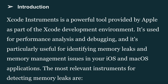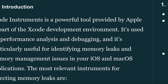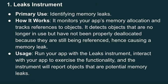The most relevant instruments for detecting memory leaks are, number one, the Leaks Instrument. Its primary use is identifying memory leaks. It works by monitoring your app's memory allocation and tracking references to objects. It detects objects that are no longer in use but have not been properly deallocated because they are still being referenced, hence causing a memory leak.